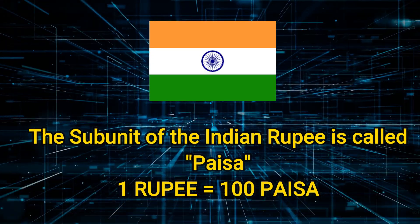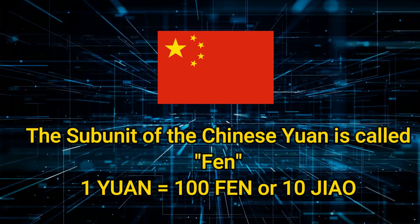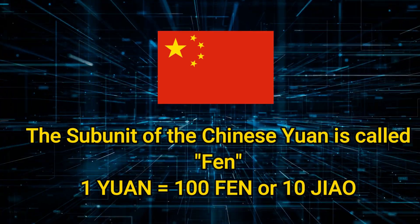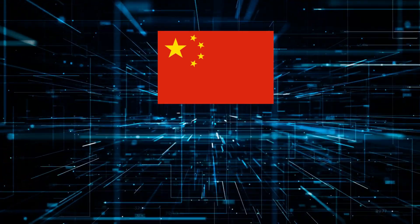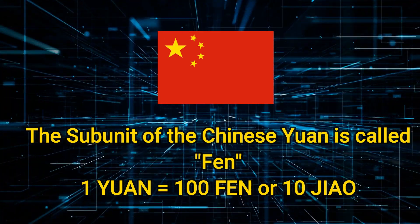Now let's talk about the subunit or divisions. 1 Indian Rupee has 100 divisions, and the division is called Paisa, so 100 Paisa is 1 Indian Rupee. If you talk about Chinese Yuan, Chinese Yuan also has 100 divisions, and its division is called Fen, and 100 Fen is 1 Yuan. China's other subunit is called Jiao, and 10 Jiao is called 1 Yuan.